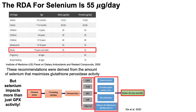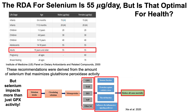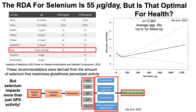Considering that the RDA for selenium was only based on glutathione peroxidase activity, is 55 micrograms per day actually optimal for health? Let's look at the data. Here we see all-cause mortality risk on the y-axis plotted against dietary selenium intake on the x-axis, in a study of about 18,000 people.